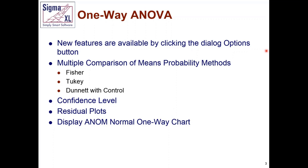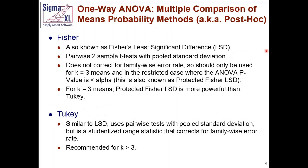We will look at Fisher, Tukey, and Dunnett. We've also added the confidence level to one-way ANOVA — previously it was fixed at 95 percent. Residual plots, previously only in two-way ANOVA, have now been added to the one-way ANOVA and Welch ANOVA. And as discussed in the first webinar, the ability to display the analysis of means in a normal one-way chart is provided as an option.